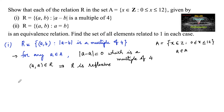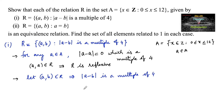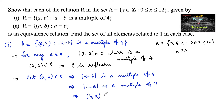For symmetry, let (a, b) belong to R₁. Then |a - b| is a multiple of 4, which implies |b - a| is also a multiple of 4, since there is only a change of sign. Therefore (b, a) belongs to R₁. So for every (a, b) ∈ R₁ there exists (b, a) ∈ R₁, hence R₁ is symmetric.